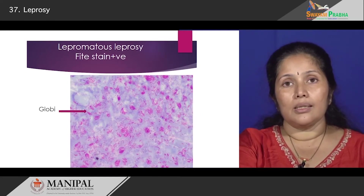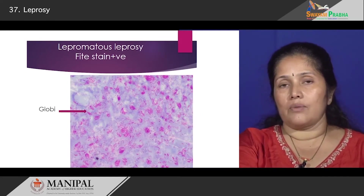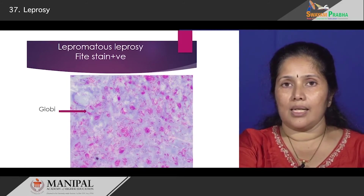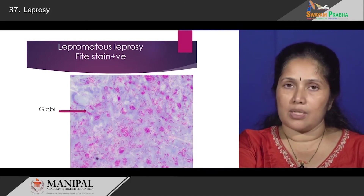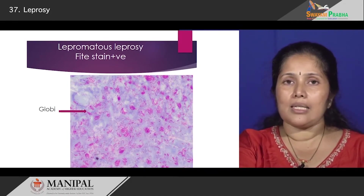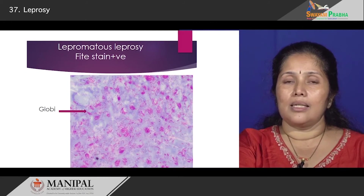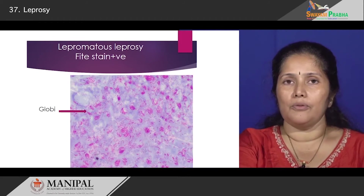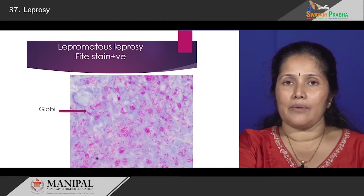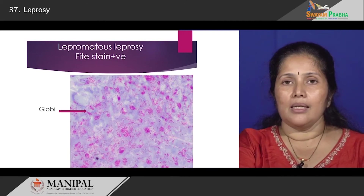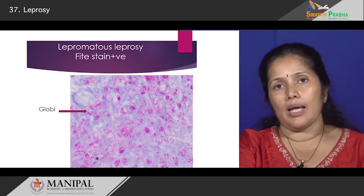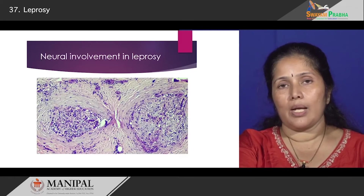Here is a picture showing the special stain known as the Fite stain — the Fite-Faraco stain — which is positive in the lepromatous end of the spectrum. In this picture you can see that the histiocytes or macrophages are completely filled with bundles of bacilli stained pink. You can see these linear pink-stained bacilli in groups, and each of these groups is known as globi.